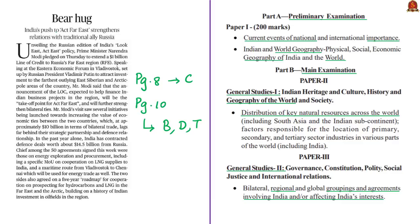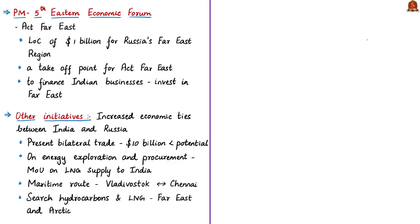Moving on to the next article discussion based on an editorial about India–Russia relations. Recently, the Prime Minister of India participated in the Fifth Eastern Economic Forum held in Vladivostok, in Russia's far eastern region. This forum was set up by the Russian President to attract investment to the far east, Siberian, and Arctic pole areas of Russia. During the forum, India unveiled the Russian edition of India's Look East/Act East policy, called 'Act Far East'. Our PM also pledged to extend a Line of Credit of 1 billion dollars to Russia's far east region.